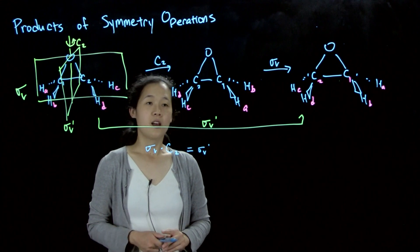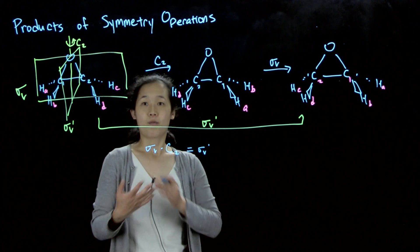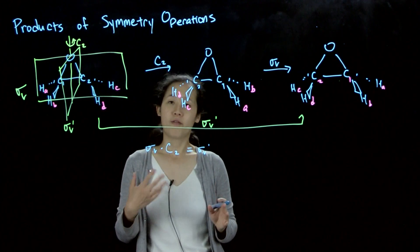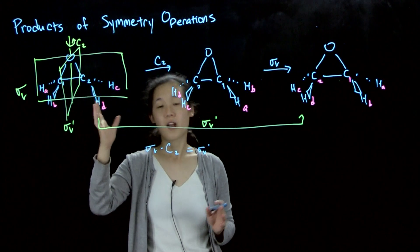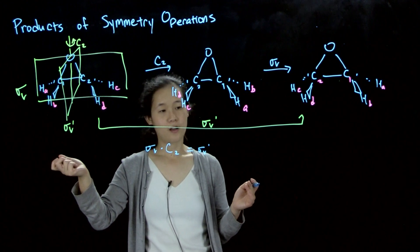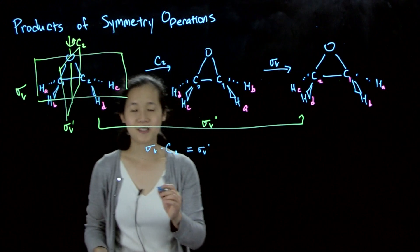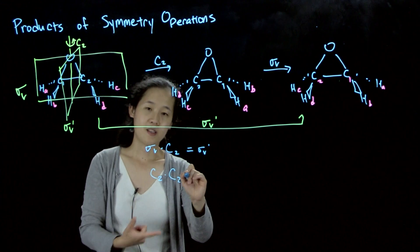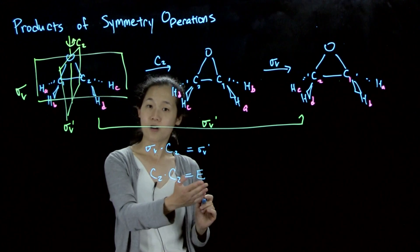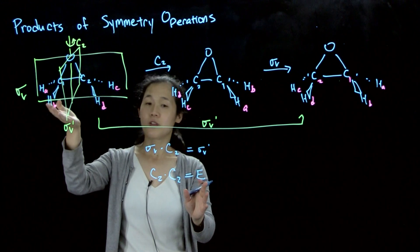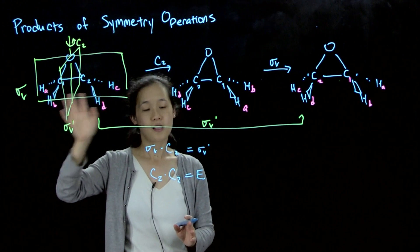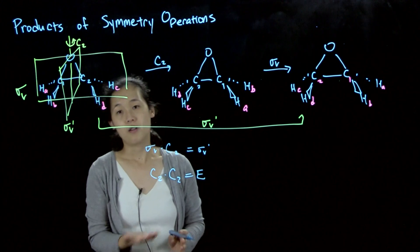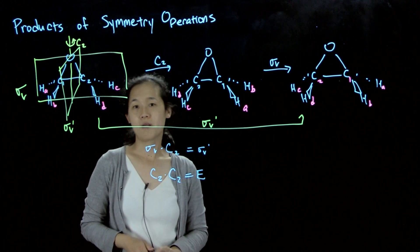We'll do a couple more examples in class, but suffice it to say, by doing a bunch of symmetry operations, you can generate a multiplication table and find out all the symmetry operations that are available for any one molecule. An obvious one, for example, if we had here C2 by C2, this is going to be equal to E. And E is also a symmetry element that's present in ethylene oxide. So you could build up a huge table if you wanted to, given the number of symmetry operations available for every molecule. And we'll get some practice doing that in class.